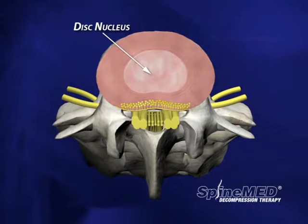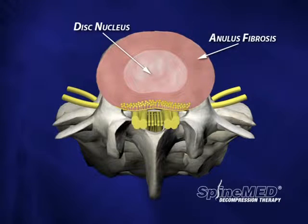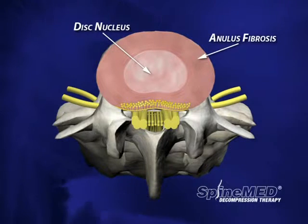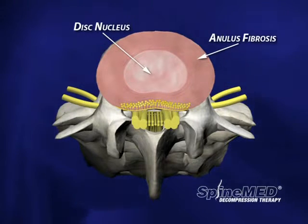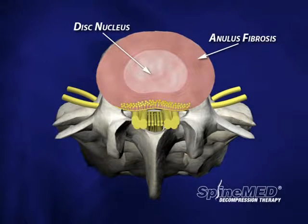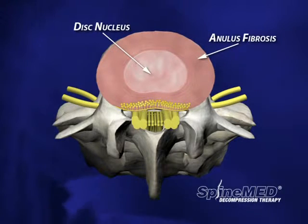The nucleus is surrounded by the annulus fibrosus. Like the term fibrosus implies, the annulus is a tough, fibrous material made primarily of type 1 collagen. Its primary job is to keep the nucleus contained in the center of the disc. In a healthy disc, the annulus is very pliable and capable of bending and flexing. Notice that the annulus has its own nerve supply, shown by the yellow dots along the outer wall.